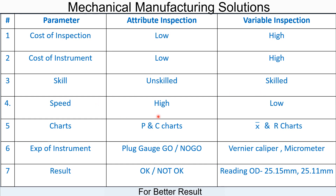The speed of inspection is very high with attribute gauges and low in variable inspection due to reading of the instrument. For attribute inspection we use P and C charts to gather the data. For variable inspection we use X-bar and R charts. Examples: attribute gauge — plug gauge go/no-go; variable inspection — vernier caliper, micrometer.